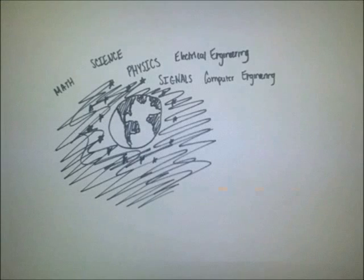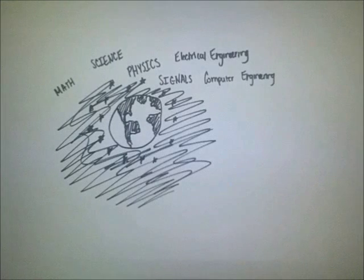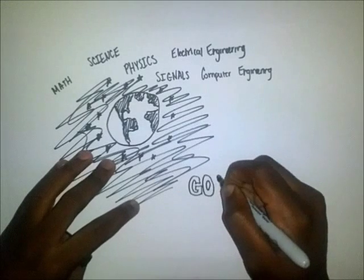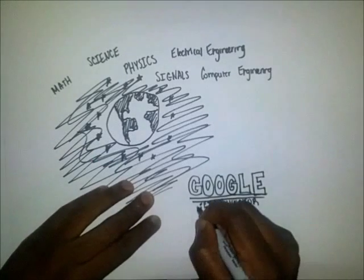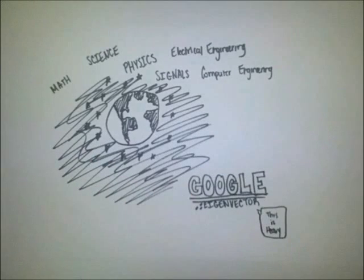As it were, you probably got to this video through an eigenvector. It's Google. Easily the biggest proponent of the eigenvector, Google bases their entire search legacy on the back of the eigen.